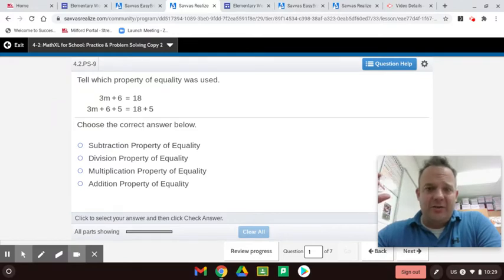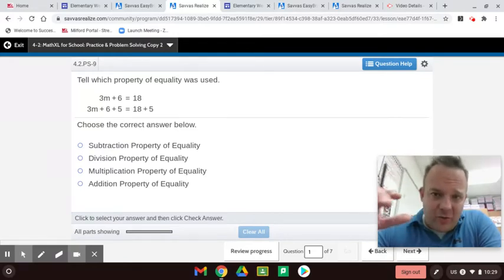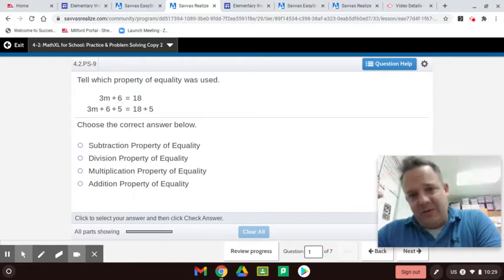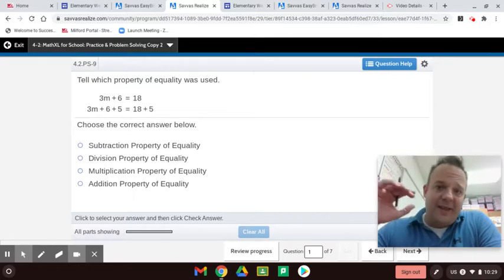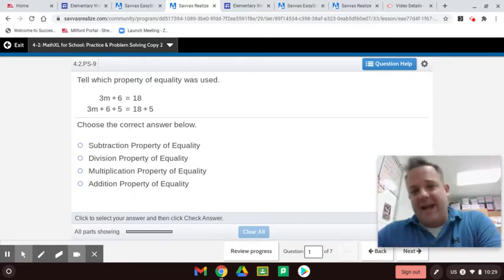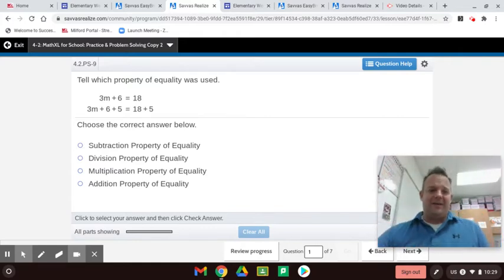Next, what you want to do is whatever you do on one side of the equation, you have to do on the other. So if you add two on one side, you have to add two on the other side. If you subtract two on one side, you have to subtract two on the other side.